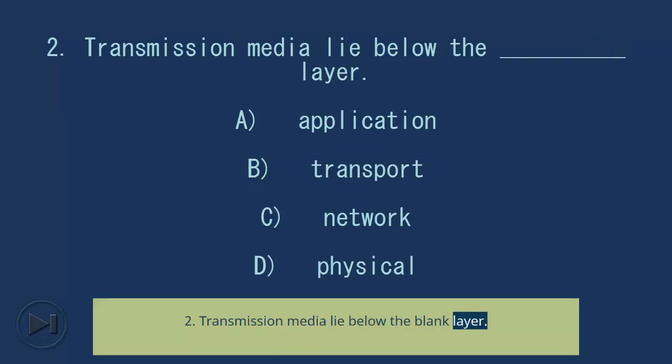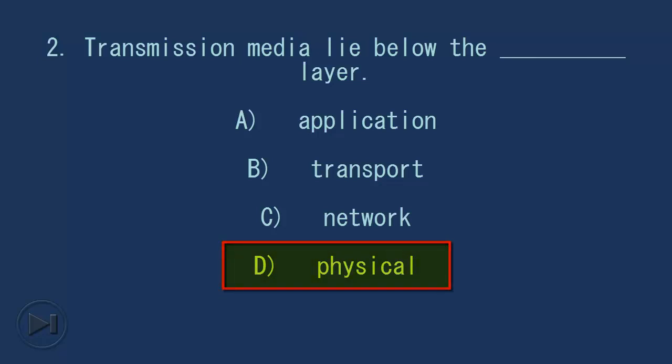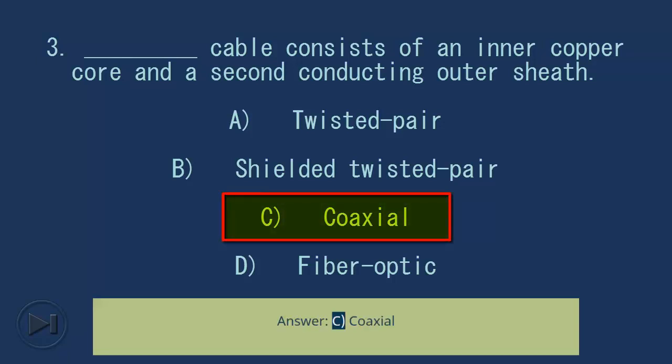Question 2: Transmission media lie below the blank layer. A) application, B) transport, C) network, D) physical. Answer: D, physical. Question 3: Blank cable consists of an inner copper core and a second conducting outer sheath. A) twisted pair, B) shielded twisted pair, C) coaxial, D) fiber optic. Answer: C, coaxial.